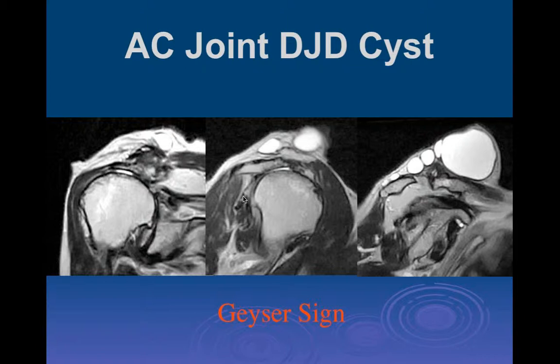Another thing that can occur with degenerative disease of the acromioclavicular joint is large cysts adjacent to the AC joint - this is called the geyser sign. Here's an example of a huge cyst. They tend to go superiorly and present as large fluctuant subcutaneous masses. So that's the geyser sign.